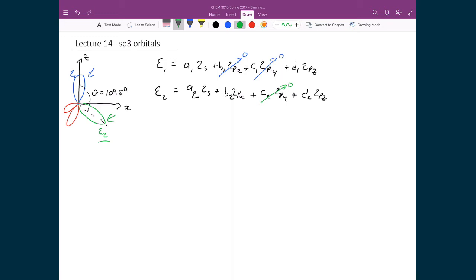So we can just immediately cross off any term that has to do with the 2py orbital. In this case, we could set c2 to be equal to zero.